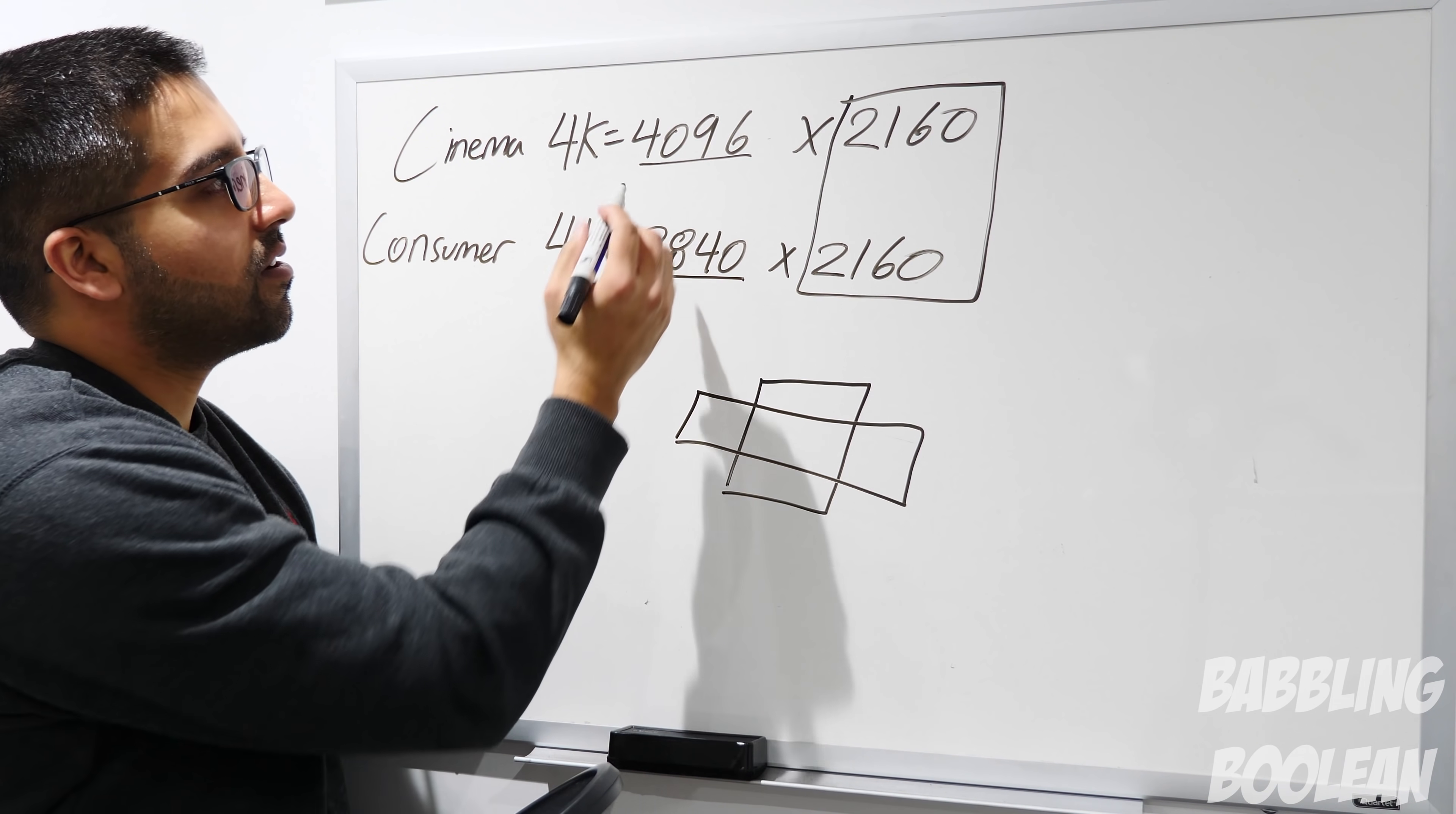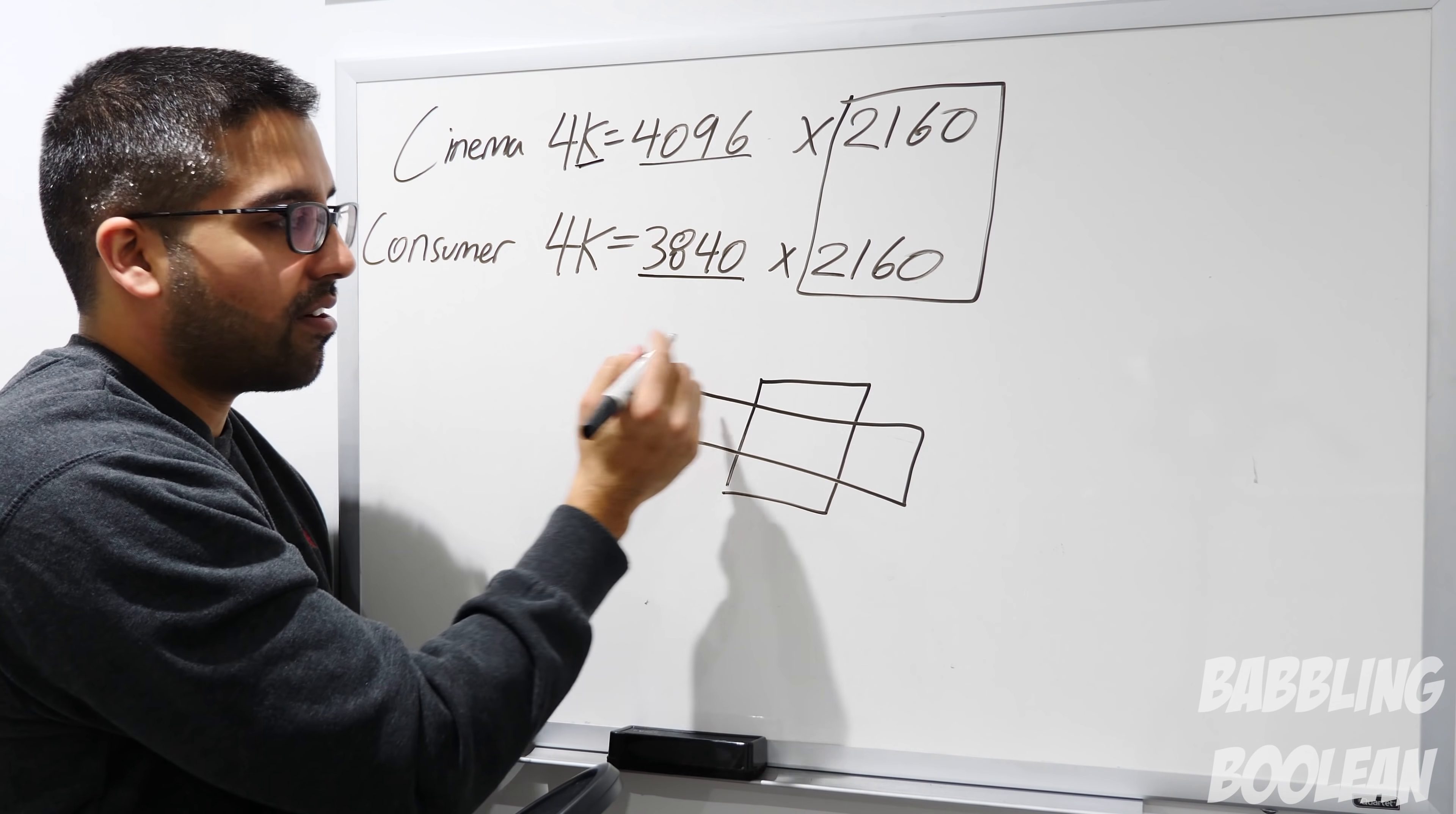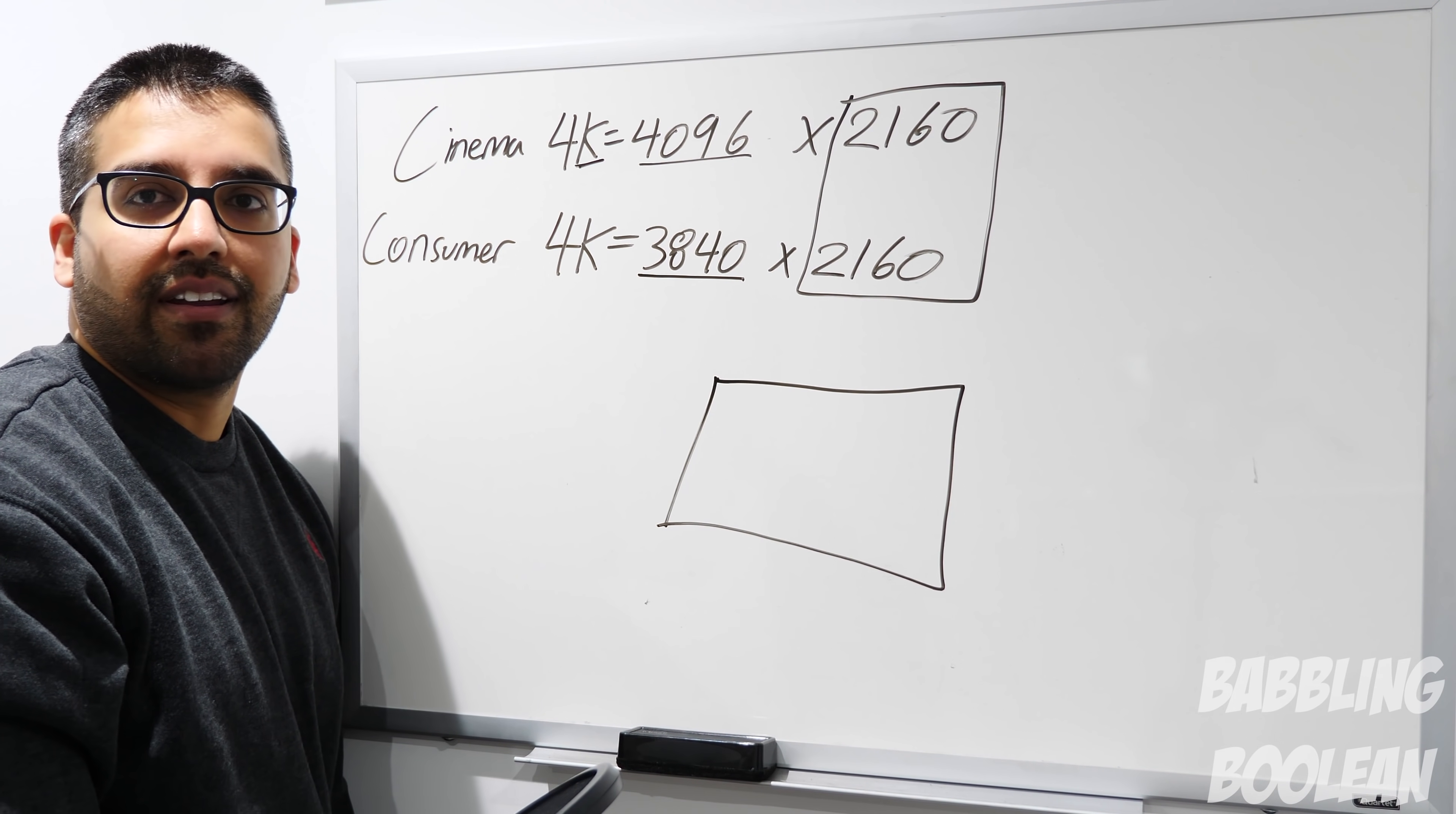4K stands for 4090 pixels, but obviously you should know that K stands for a thousand. Well, there's 4000 pixels going across, right? Now you're thinking, hold on a second, 4000 pixels at the cinema level, but that's not 4000 pixels at the consumer level. Am I getting ripped off?